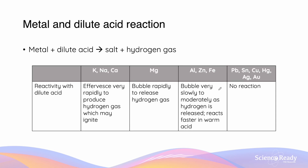Metals will react with dilute acids in order to form a salt and hydrogen gas. Remember that a salt is a term used to describe ionic lattice substances, and in this case they will be ionised in the water. The more vigorous the reaction between a metal and a dilute acid, the more reactive we should expect those metals to be.